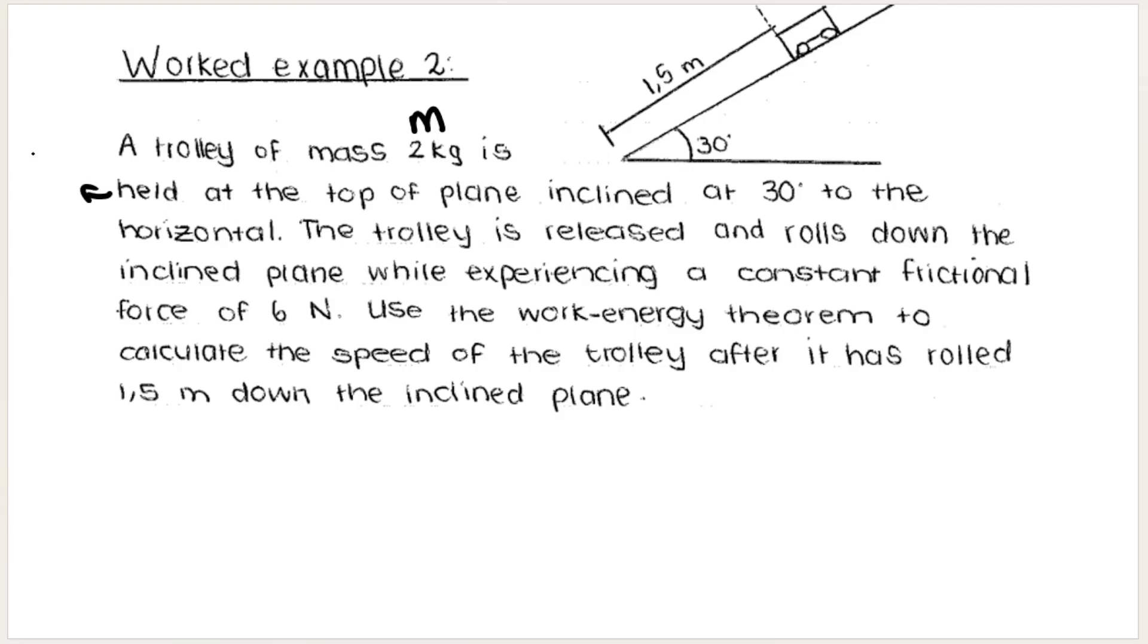Remember, for work energy power we care about initial and final velocity because our work-energy theorem states the net work done on the object is equal to the change in the object's kinetic energy, and kinetic energy involves velocities and speeds. So we have the mass, we have the initial velocity.